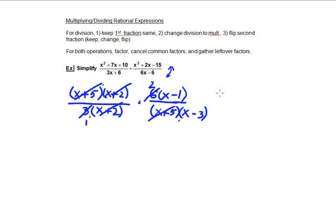So when I consolidate everything in the numerator, the only factors that remain are 2, and then this binomial factor, x minus 1. In the denominator, the 1, and this is also reduced to 1, essentially x plus 2 divided by x plus 2 reduces to 1, and the x plus 5 is gone. So the only factor that remains is this binomial, x minus 3.